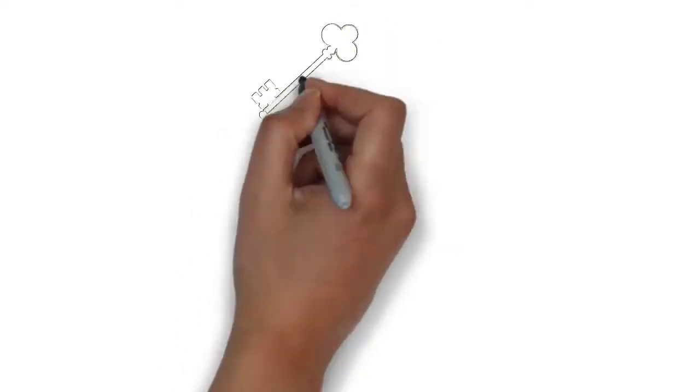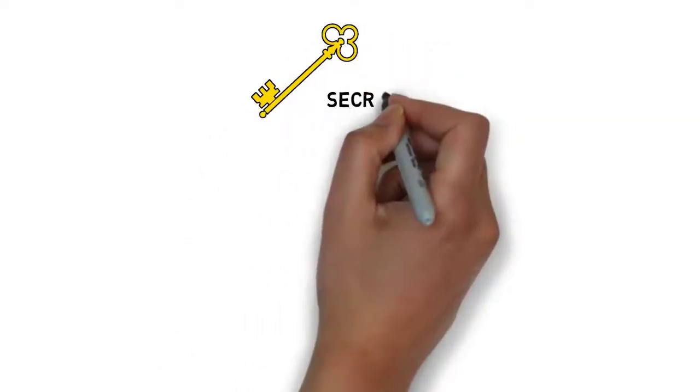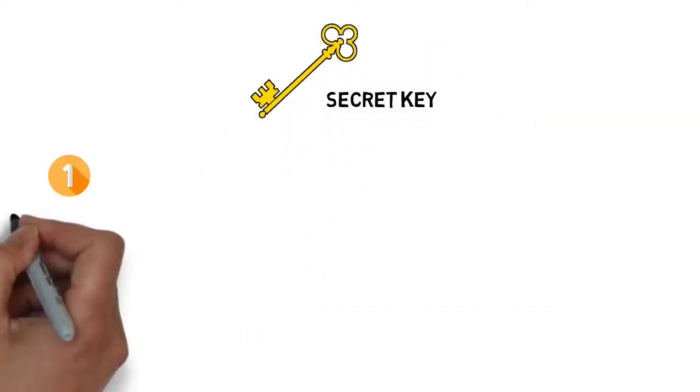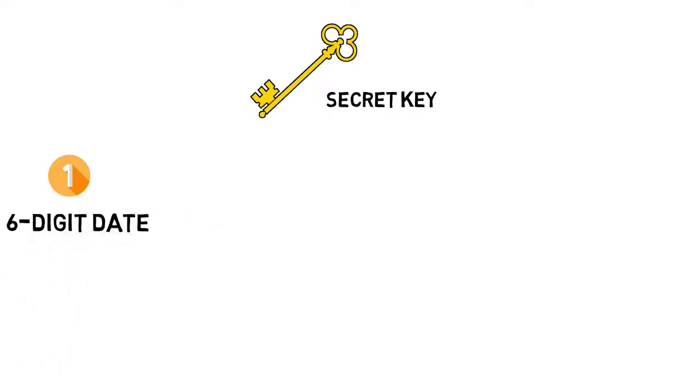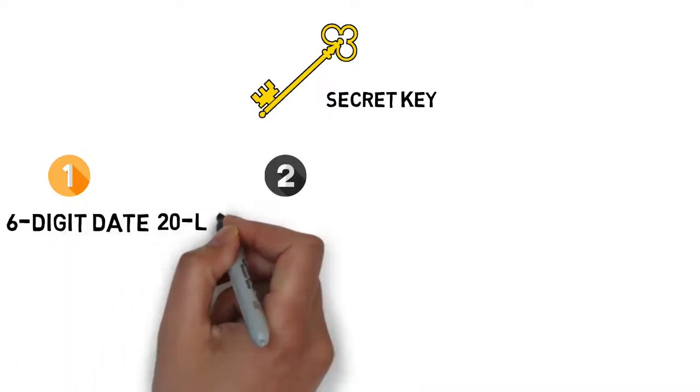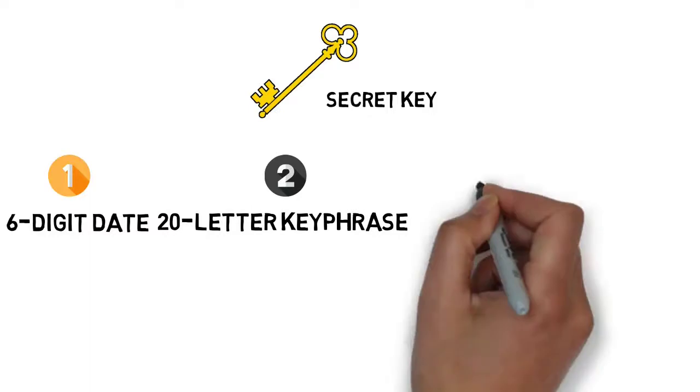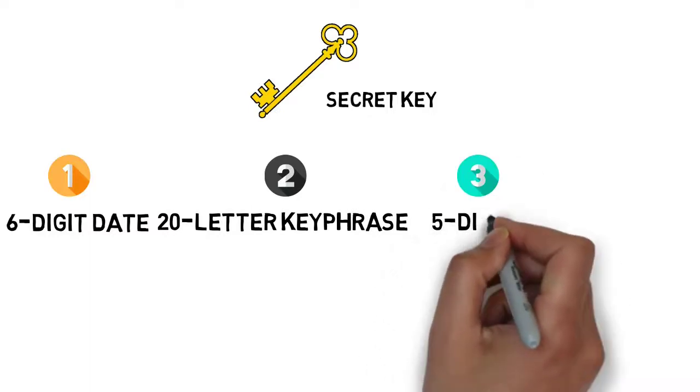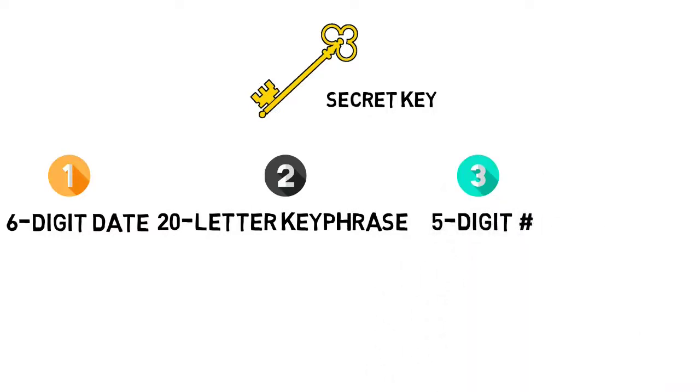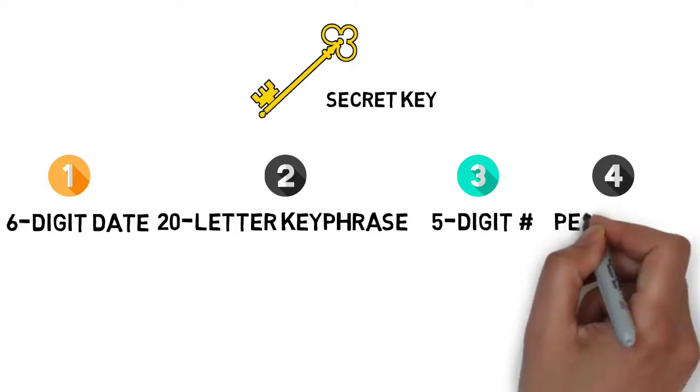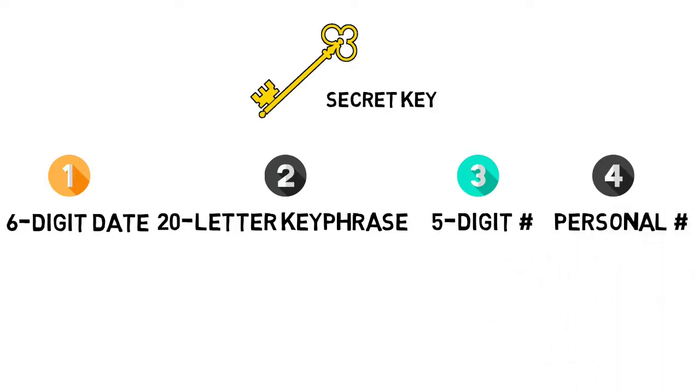The secret key used for encryption included four elements: a date in a six-digit format, a 20-letter key phrase usually the first line of a song, a five-digit number called a random indicator group, and the agent's personal number, usually a one or two-digit number.